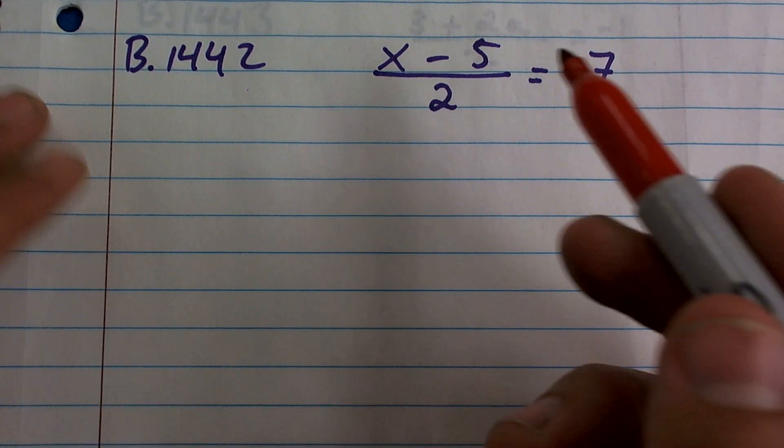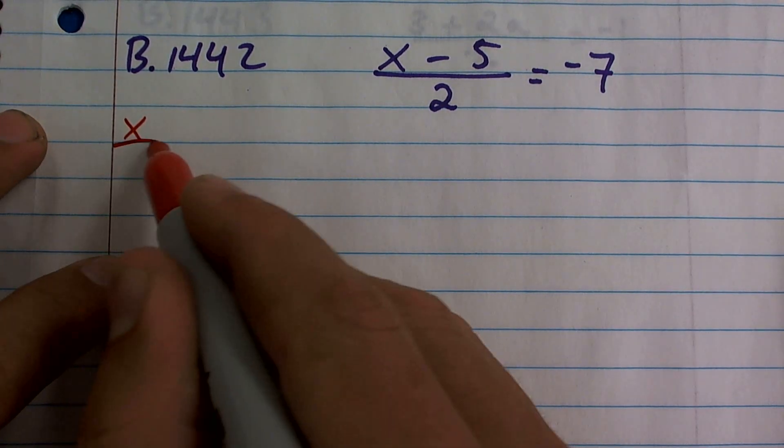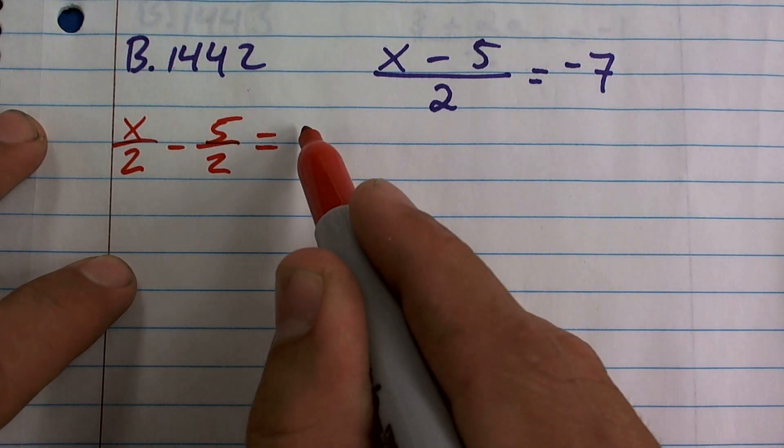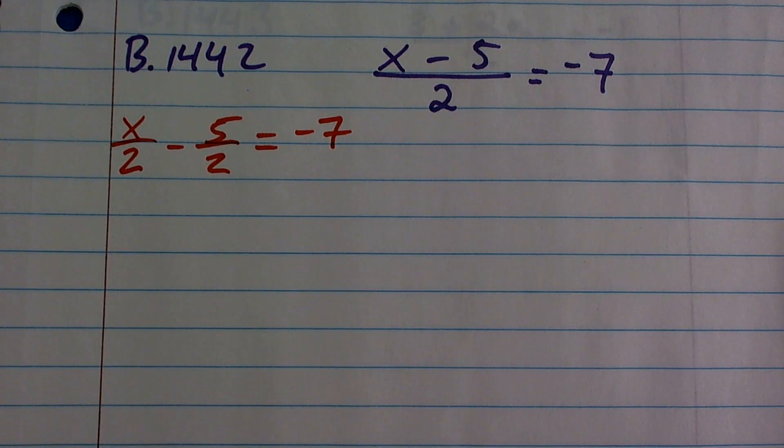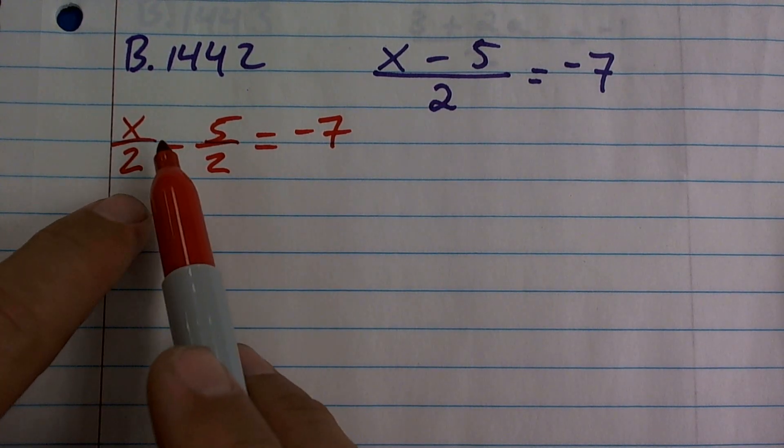So if you want to solve it by using the methods we've been using, you're going to have to rewrite it as x divided by two minus five divided by two equals negative seven. And because remember, just think about it. Here, you can't combine your numerators.